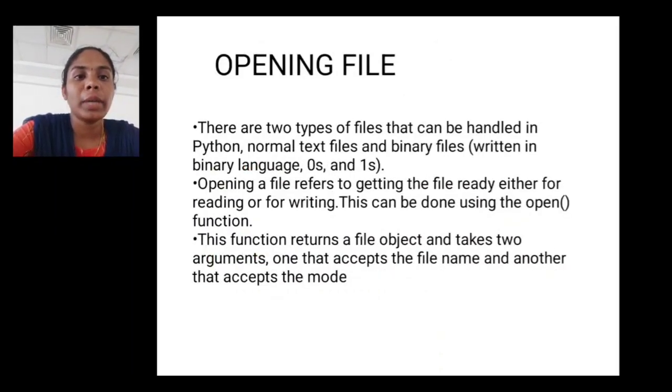Opening file. There are two types of files that can be handled in Python: normal text files and binary files written in binary language, 0s and 1s. Opening a file refers to getting the file ready either for reading or writing. This can be done using the open function. The function returns a file object and takes two arguments: one that accepts the file name and another that accepts the mode.